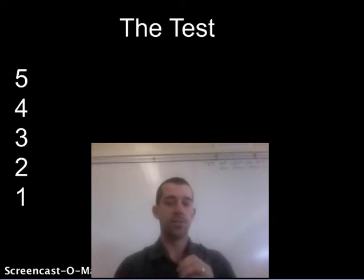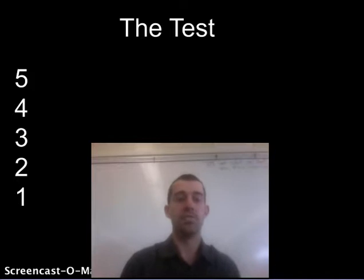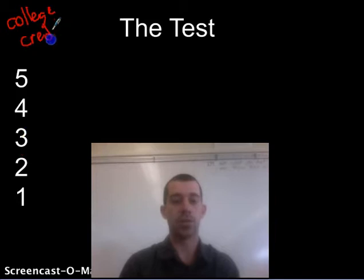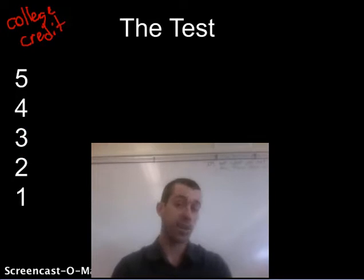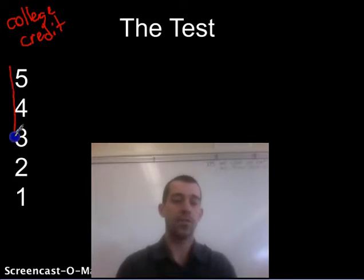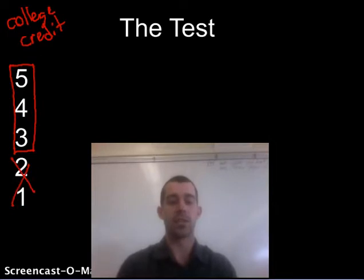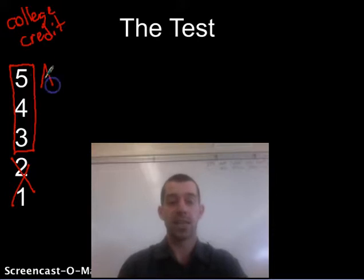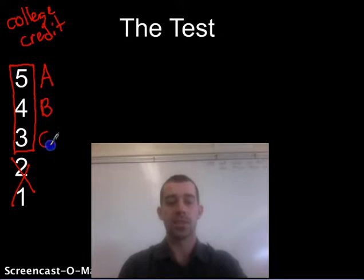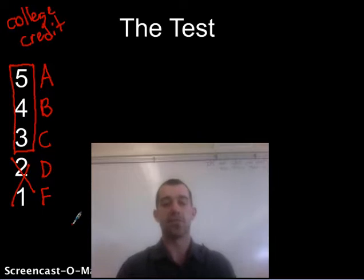The goal of this test is to receive college credit — that's what it's all about. In order to get college credit, you have to score a 5, 4, or 3 on the exam. If you get a 2 or a 1, you don't get college credit. A 5 is like getting an A in a college class, 4 is like a B, 3 is like a C, 2 is like a D, and 1 is like an F — which is why D and F don't give you credit.